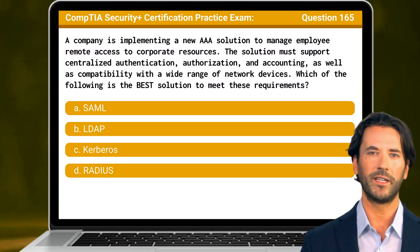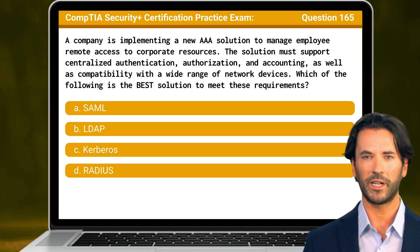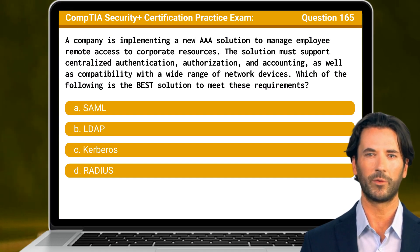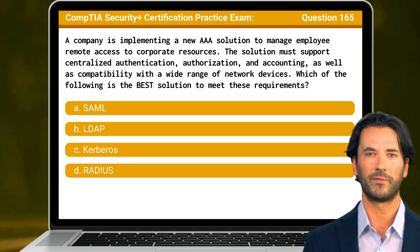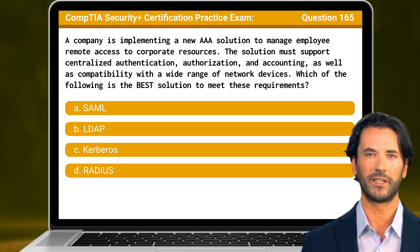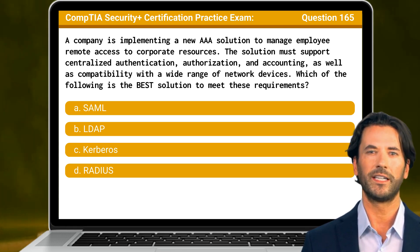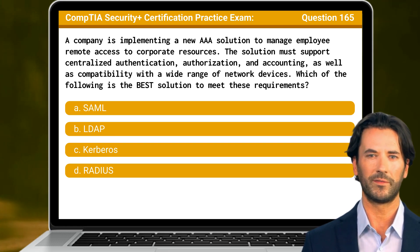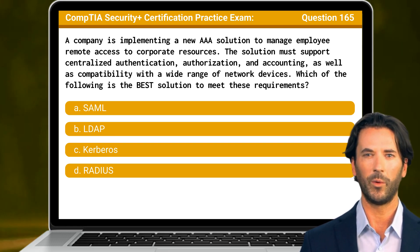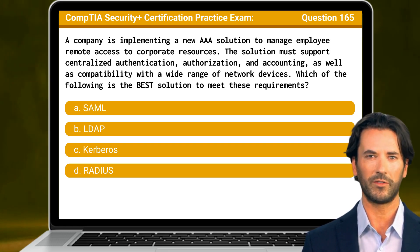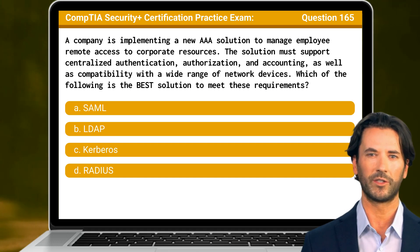Question 165. A company is implementing a new AAA solution to manage employee remote access to corporate resources. The solution must support centralized authentication, authorization, and accounting, as well as compatibility with a wide range of network devices. Which of the following is the best solution to meet these requirements?